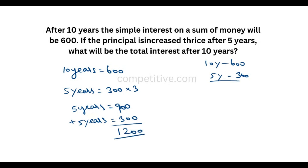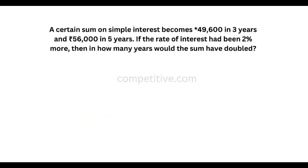Okay, this is the next question. A certain sum at simple interest becomes 49,600 in 3 years and 56,000 in 5 years. If the rate of interest has to be 2% more, then how many years would the sum have been doubled?